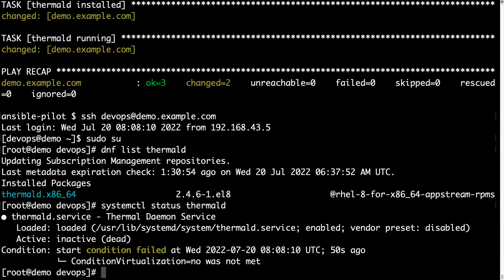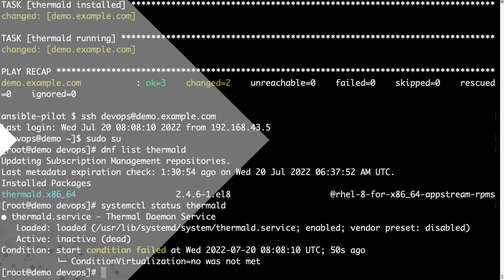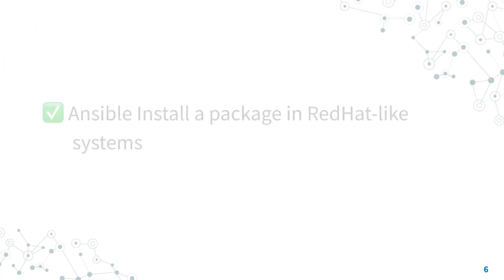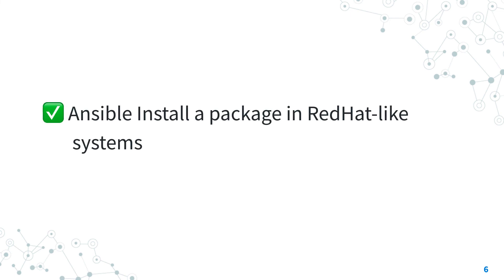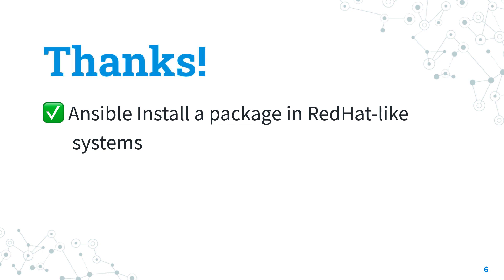Please bear this in mind. Everything looks correct — the package was successfully installed and the service was running. Now you are ready to cool down your workstation. Execute this code on a real machine. You now know how to reduce Intel laptop CPU temperature overheating in Linux using the Ansible module package and thermal-d. Thank you for watching.